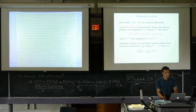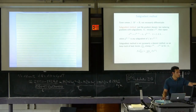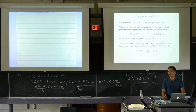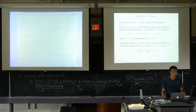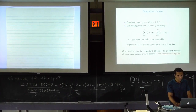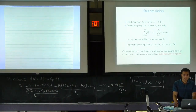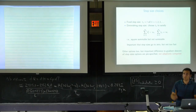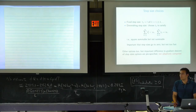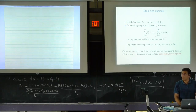The subgradient method is not a descent method necessarily, so we have to keep track of the best function value we've seen across all iterates. If somebody tells us to stop after some number of iterations, we use that best point as our solution or approximate solution. In subgradient method, unlike gradient descent, we don't compute step sizes adaptively based on the data. They're fixed ahead of time. One rule is a constant step size; another is to choose them to be square summable but not summable.